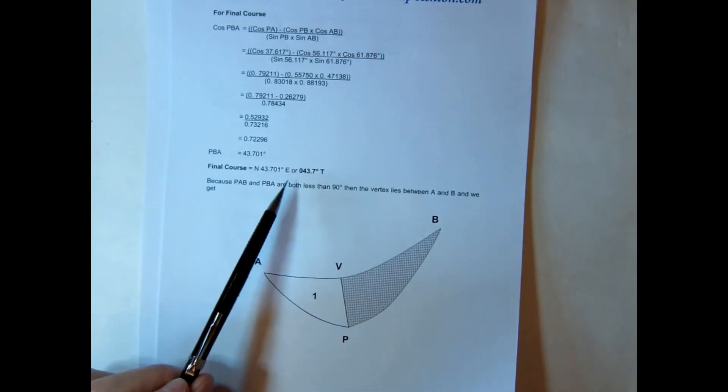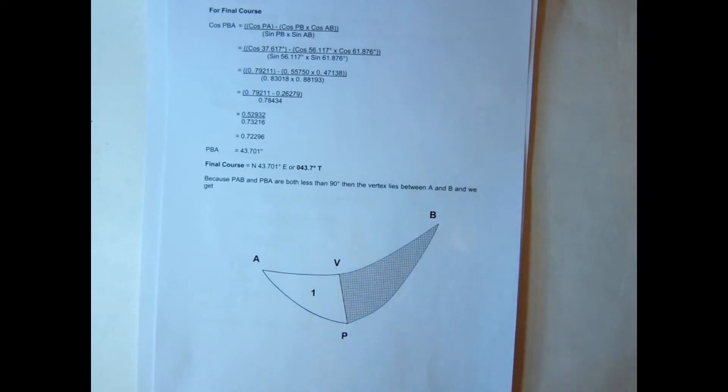We get a final course of 043.7. Because both these values PAB and PBA were less than 90, then the vertex must lie between our two positions.